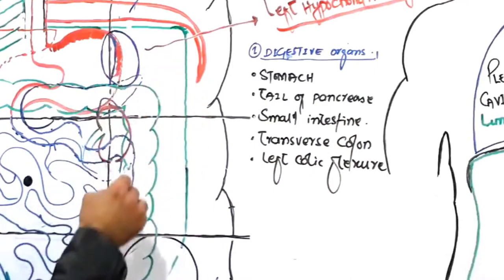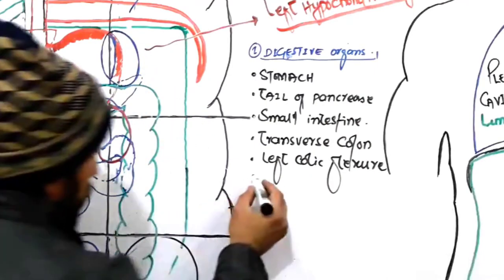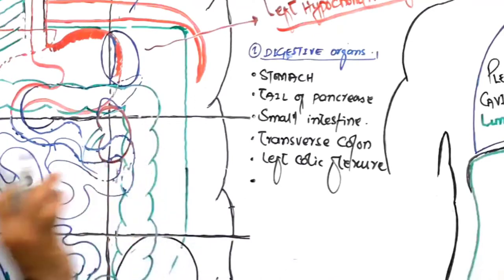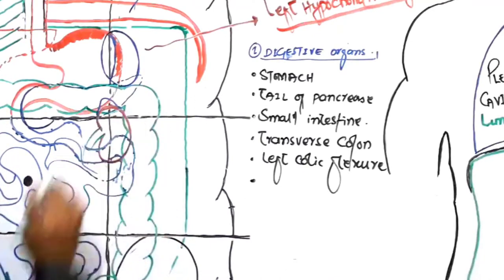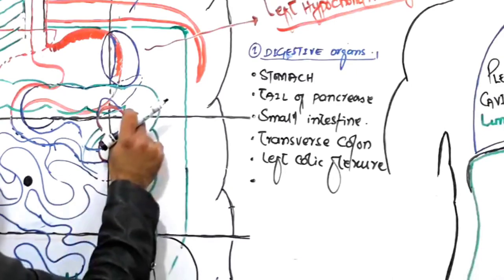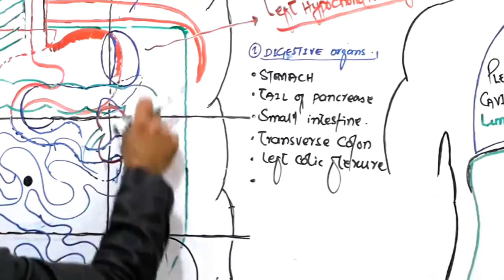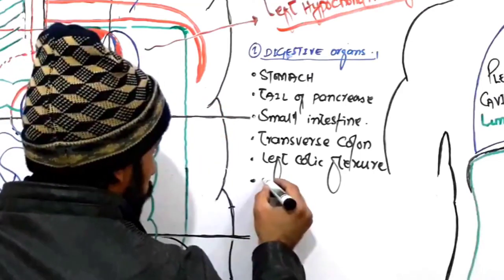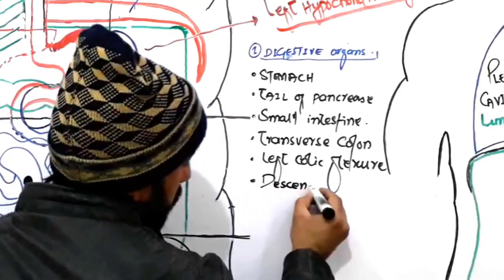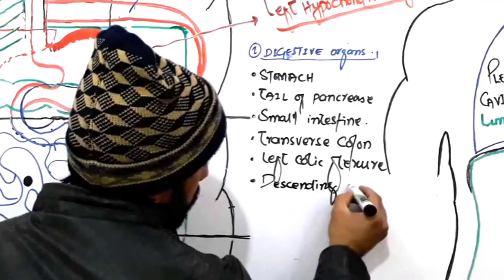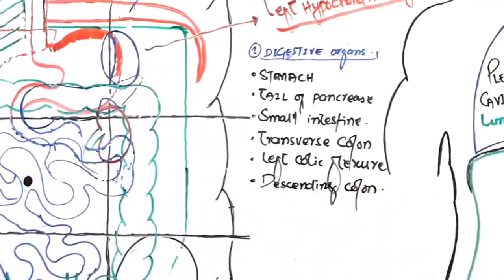Furthermore, a very small part of the descending colon — specifically the beginning of the descending colon — is also found in the left hypochondriac region.